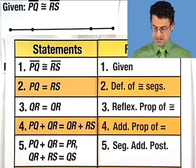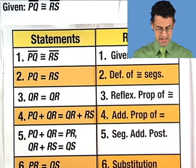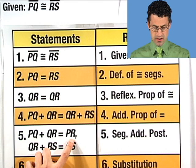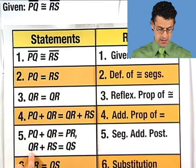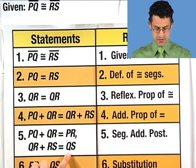By the segment addition postulate, we see that PQ plus QR equals PR. And similarly, QR plus RS equals QS.